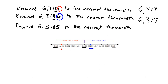All right, try rounding 6.3185 to the nearest thousandth. Pause and try it. This was a bit of a trick question. 6.3185 is right exactly in the middle — halfway between 6.318 and 6.319. Since it's exactly in the middle, what we decide to do always is round it up, unless told differently. So it will go to 6.319.